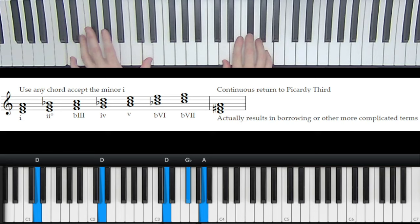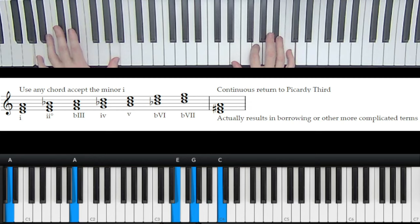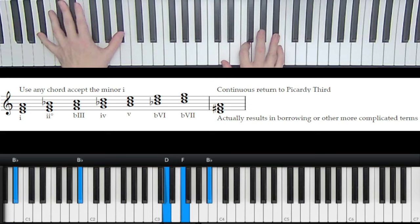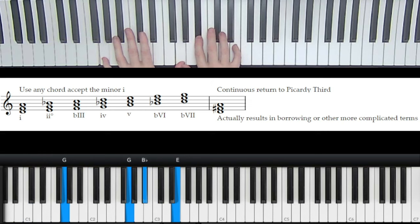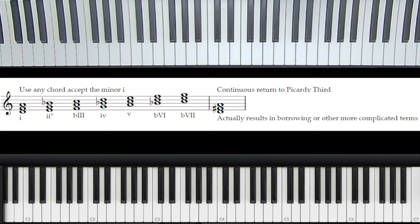You have more chord options. So really this is just borrowing from parallel minor, but let's go through the chords that I did. It's D major, B flat, A minor seventh, D major. Okay. B flat, F, C, E diminished, D major.